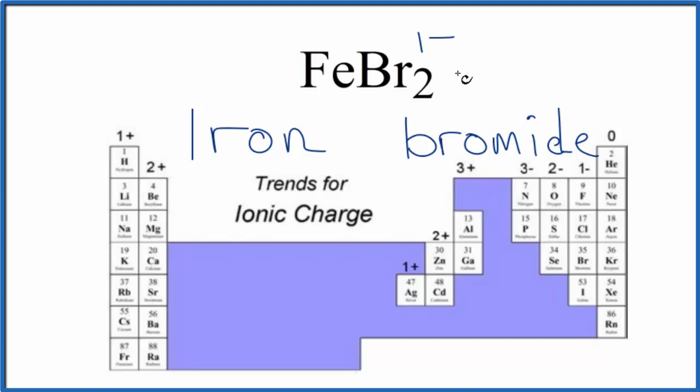Since we have two of them, that's two minus. The iron has to be two plus to balance the charge, to give us a net charge of zero. Since iron has a two plus charge, we need to write that as the Roman numeral two there, between the iron and the bromide.